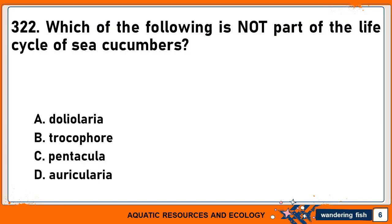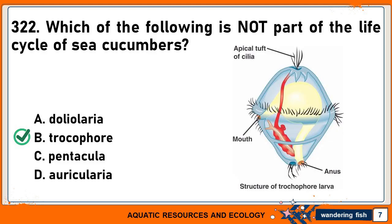Which of the following is not part of the life cycle of sea cucumbers? A. Doliolaria. B. Trocophor. C. Pentacula. Or D. Auricularia. The correct answer is B. Trocophor.